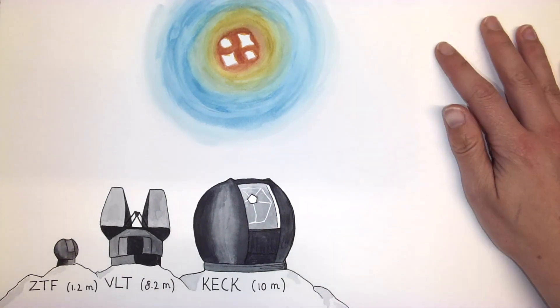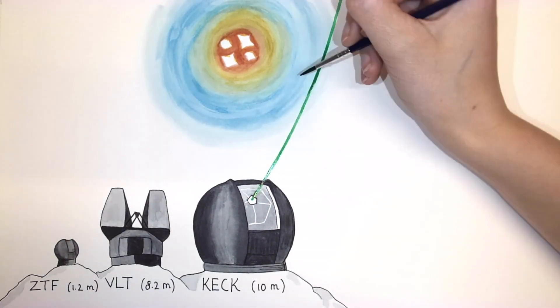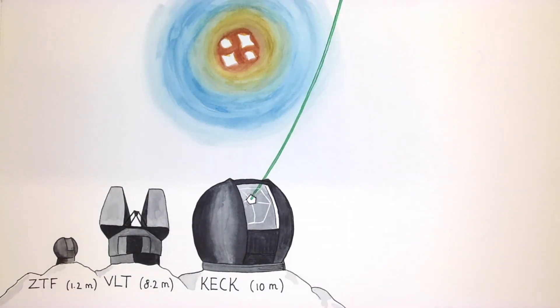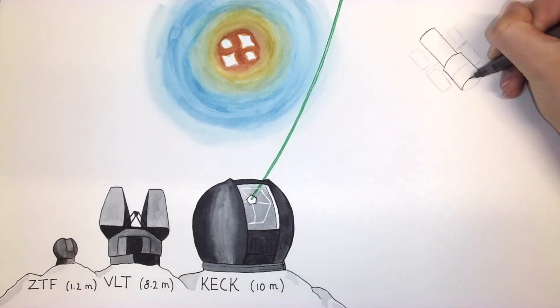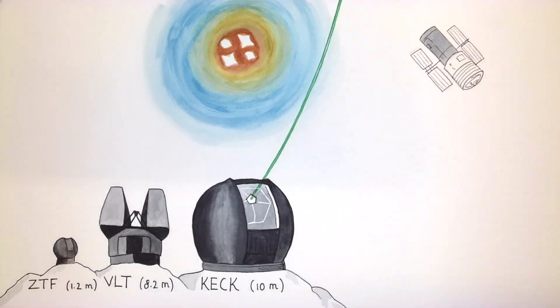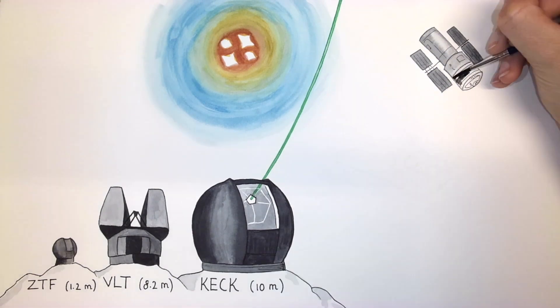Adaptive optics corrects atmospheric distortions using a laser, providing us with an exceptionally sharp view from Earth. Supernova Zwicky was also observed from space with the Hubble Space Telescope.